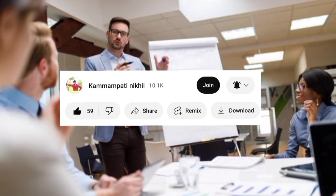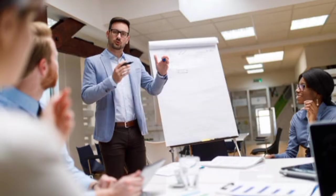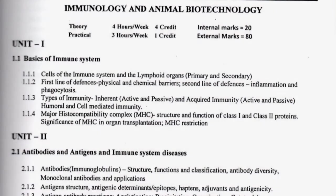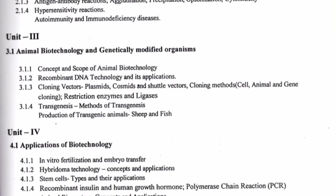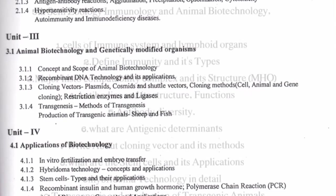5th Semester Geology: Immunology and Animal Biotechnology. The main topic areas are: 1. Basics of Immune System, 2. Antibodies, Antigens and Immune System Diseases, 3. Animal Biotechnology, 4. Applications of Biotechnology. These are the important questions.